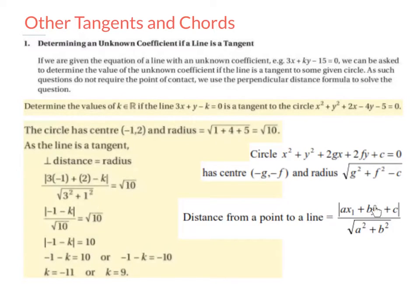Our x1 and y1 is going to be our point. So x1 is minus 1, and y1 is 2. We substitute into the formula. We get the modulus of 3 times minus 1 plus 2 minus k, all divided by the square root of 3 squared plus 1 squared. And we let this equal the radius, which we got to be root 10.